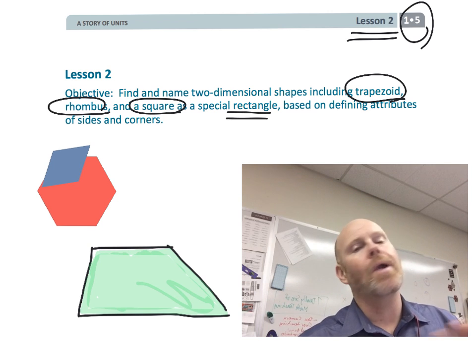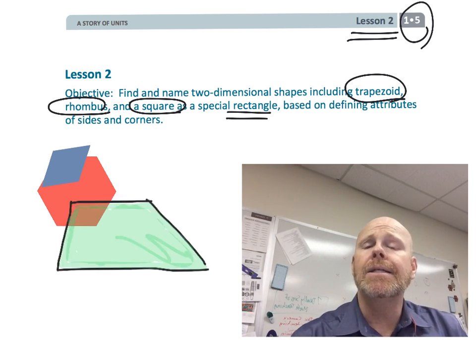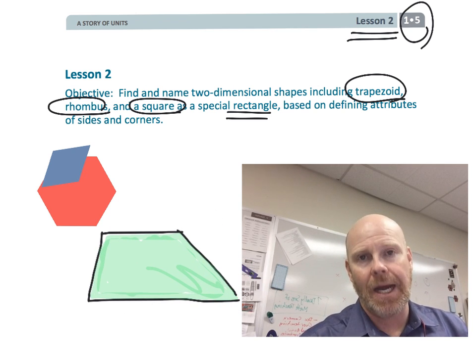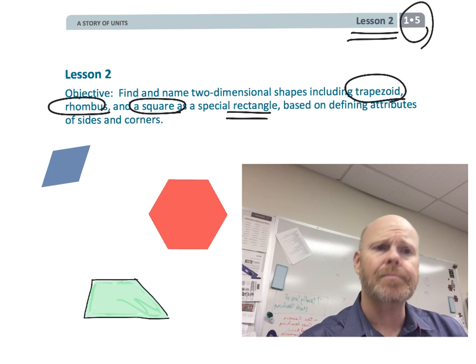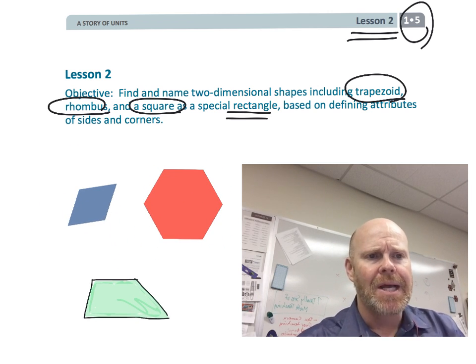So, a trapezoid for right now, this basic figure right here that you're looking at, is a trapezoid because it's got at least one pair of parallel lines. And of course, here's a hexagon, here's a rhombus, and of course we all know what a square looks like. So, let's get started.